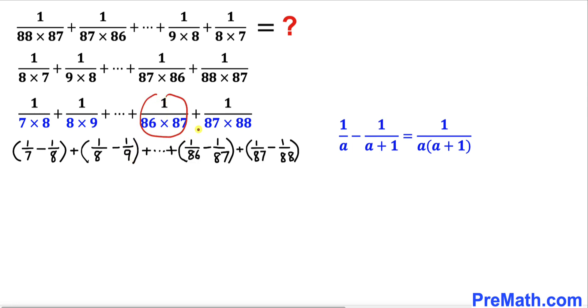We took care of this one over here, and finally this one. In this next step I've opened up the parentheses. We can see negative 1 over 8 and positive 1 over 8 cancel. Negative 1 over 9 and the next positive 1 over 9 cancel.